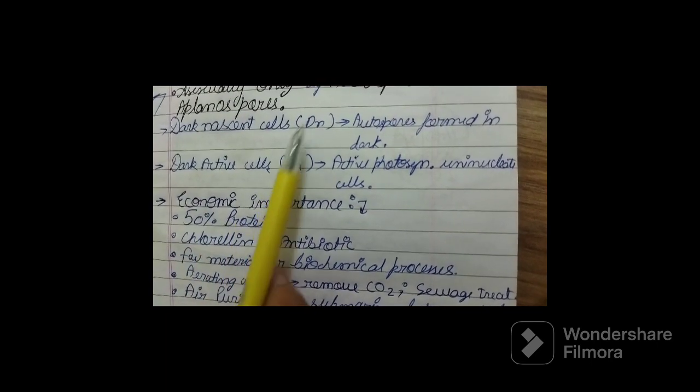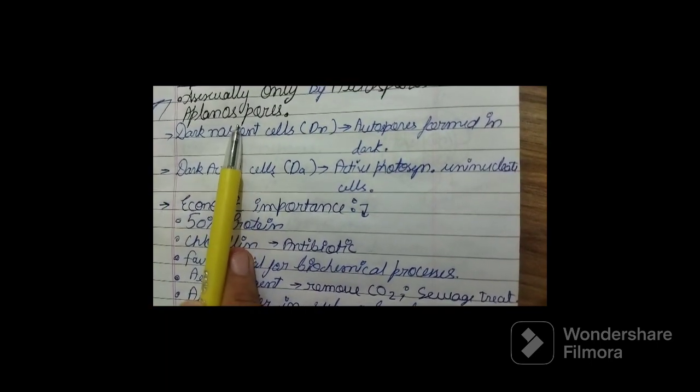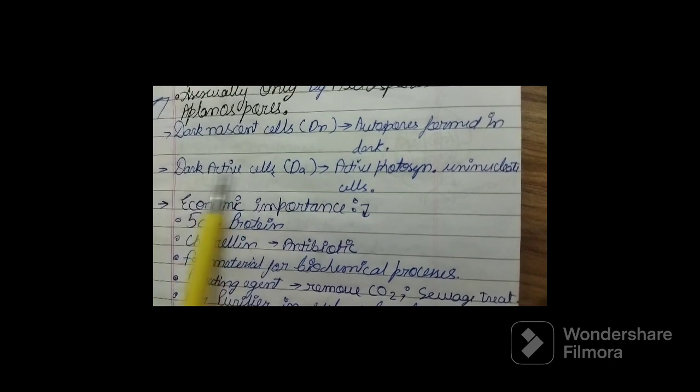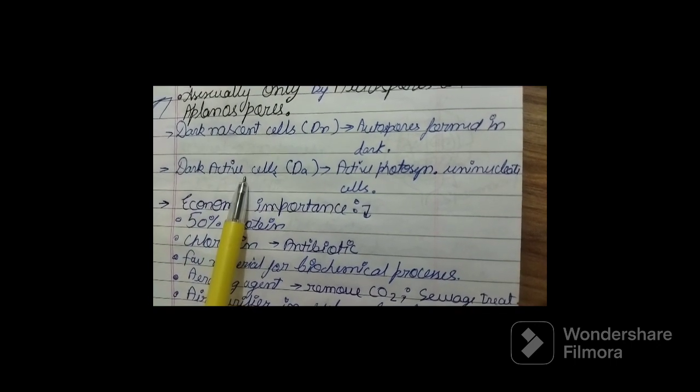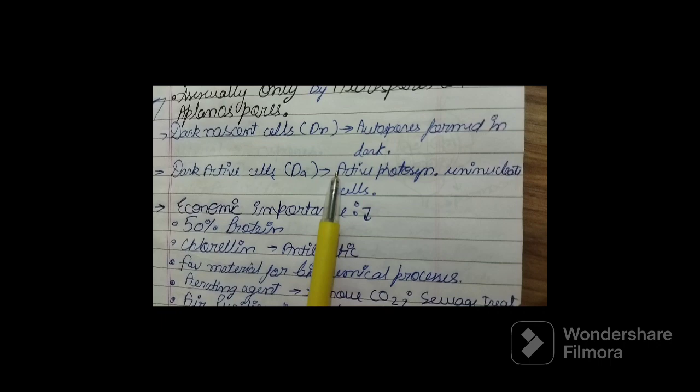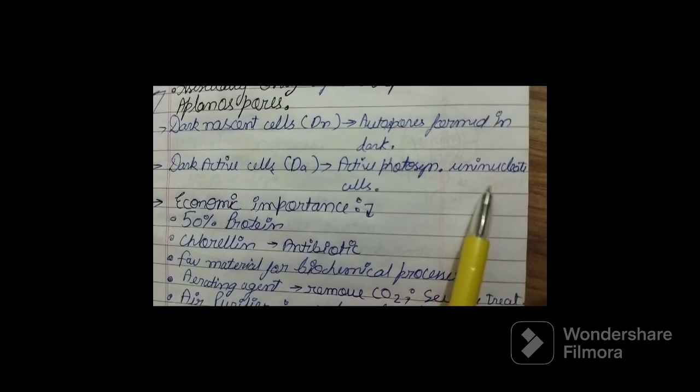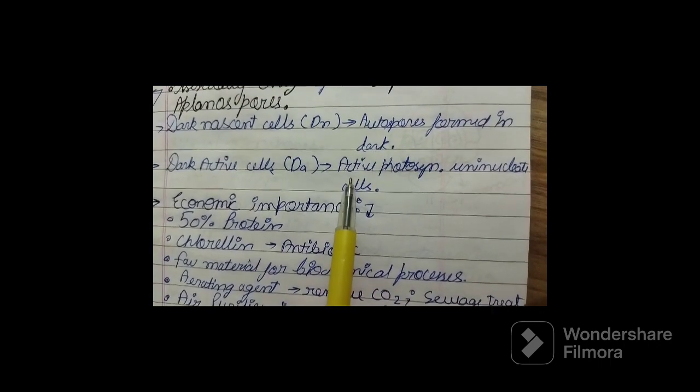Now these dark nascent cells give rise to dark active cells later on, which are your active photosynthetic uninucleate cells.